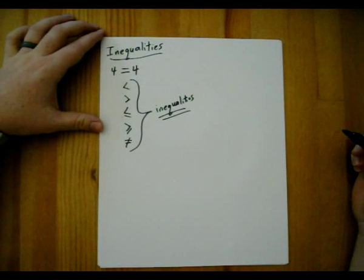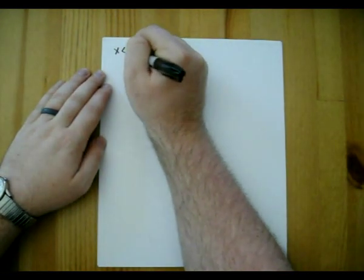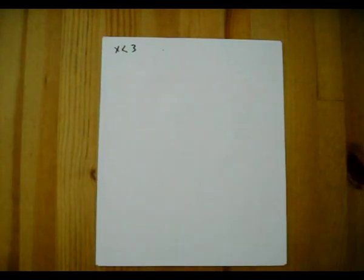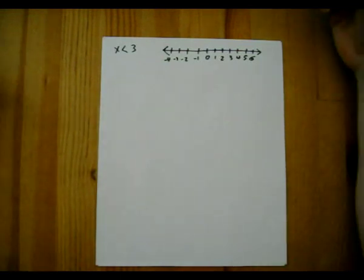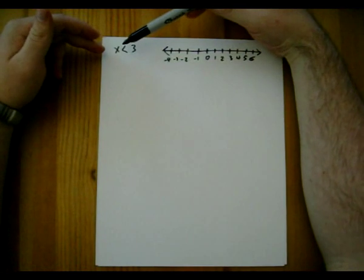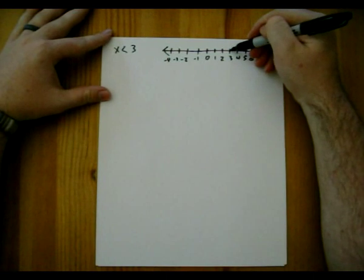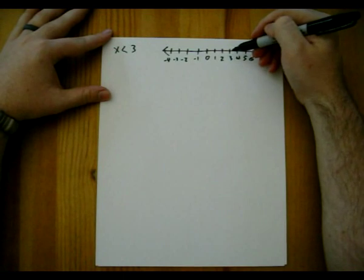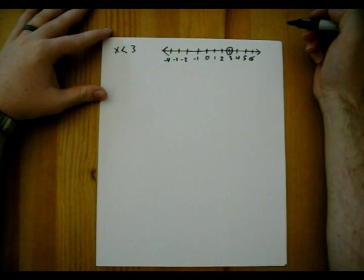Let's see some examples of inequalities. Our first example will be x is less than 3. To do this, we're going to need a number line. We want to look at where x is less than 3, and x here just represents any number. We know that at 3, that is not less than 3 — 3 is equal to 3 — so this is a number that is not going to count in our solution.